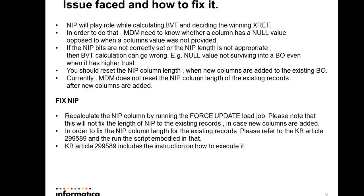However, you should bear in mind that the NIP column length for existing records will not be automatically recalculated when you add a new column to an existing base object. For example, if you have 10 columns and the NIP has a length of 10, and you then add two more columns to the base object, the existing records' NIP column will remain at length 10, which is incorrect and can lead to issues during load job or PUT call.